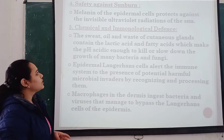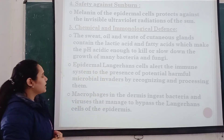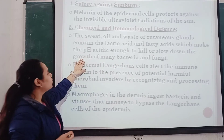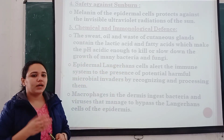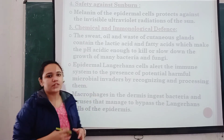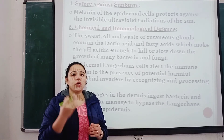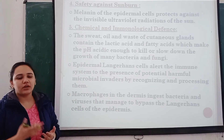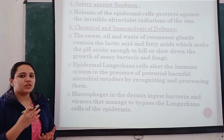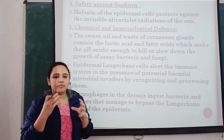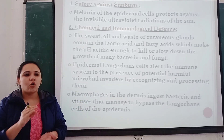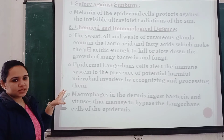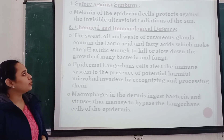Apart from that, chemical defense: the sweat, oil, and waste of cutaneous glands contain lactic acid and fatty acids, which make the pH acidic enough to kill or slow down the growth of many bacteria and fungi. In addition to the Langerhans cells and macrophages function, our skin produces sweat, oil, and waste products that provide chemical defense. This is how the skin is involved in chemical and immunological defense.